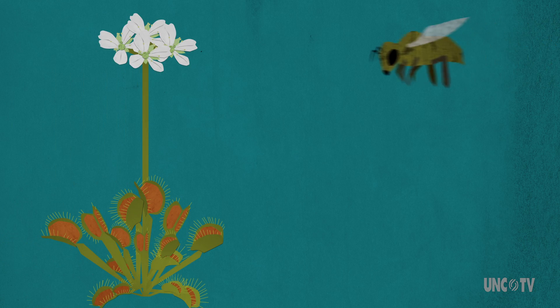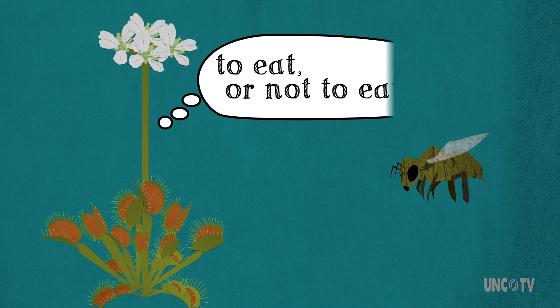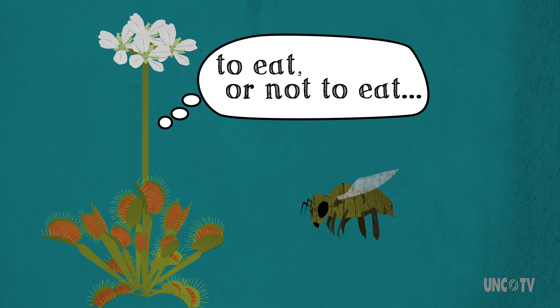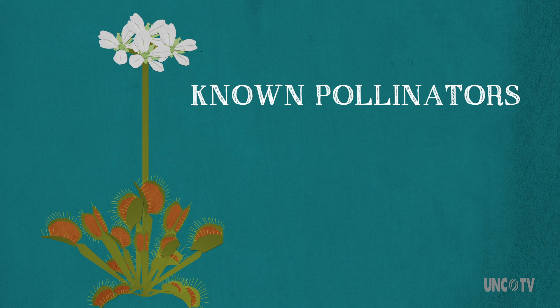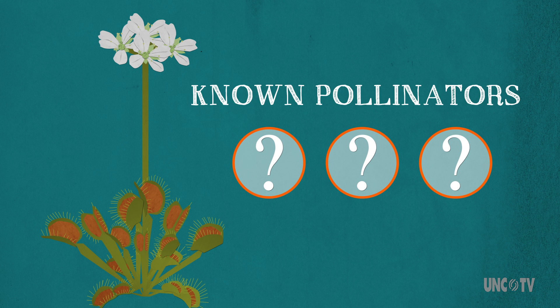But how does a carnivorous plant avoid eating the insects that pollinate it? That is a question that scientists are asking as well, and although they don't yet know all of the insects that pollinate wild flytraps, they have some ideas of how it all might happen.